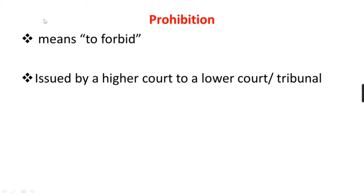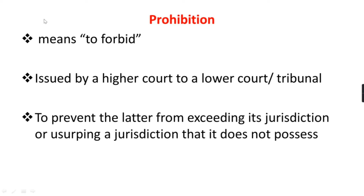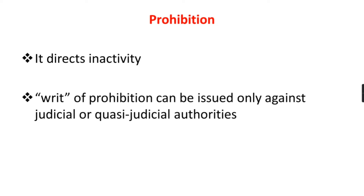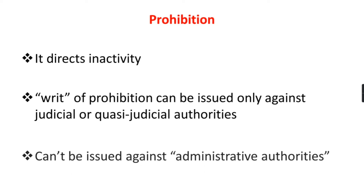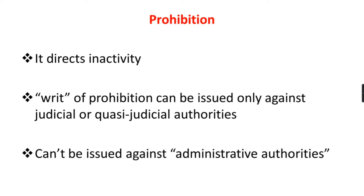The writ of Prohibition means 'to forbid.' It is issued by a higher court to a lower court or tribunal, and its objective is to prevent the lower court from exceeding its jurisdiction or usurping a jurisdiction it does not possess. This writ directs inactivity and prevents the lower court from acting. It can be issued only against judicial and quasi-judicial authorities — not against administrative authorities.